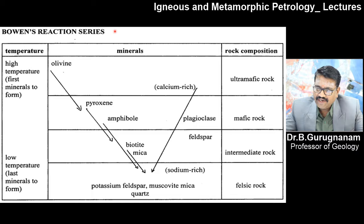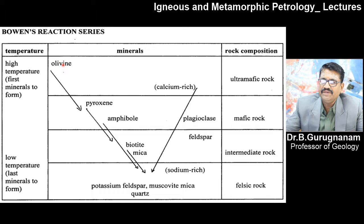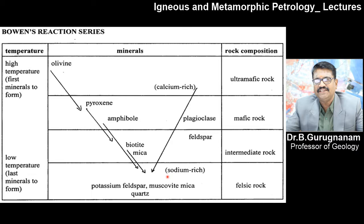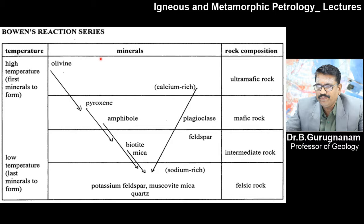This is the Bowen's reaction diagram. All geologists should always keep in mind this diagram — the discontinuous series of minerals on one side, and the continuous series on the other. Once crystallized from varying temperature and pressure conditions, this is the continuous series. The temperature is high at the top — this is the ultramafic zone — where silica does not get settled down first; the magma allows the ultramafic minerals to settle first.